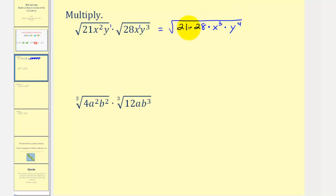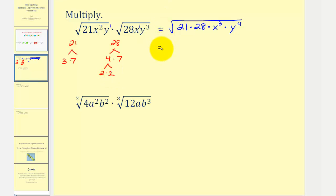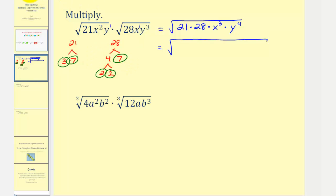To simplify this, we want the prime factorization of 21 × 28. We find them separately and then combine: 21 = 3 × 7, and 28 = 4 × 7 = 2 × 2 × 7. It's easier to find the prime factorization in this form rather than multiplying them together first and then factoring.